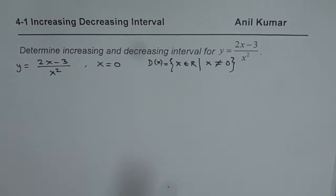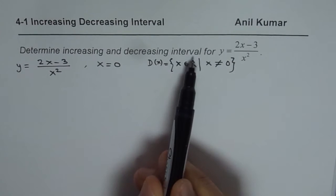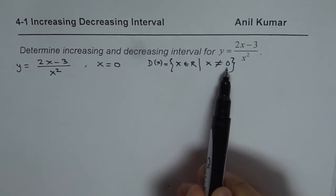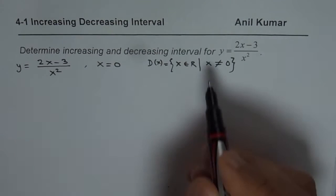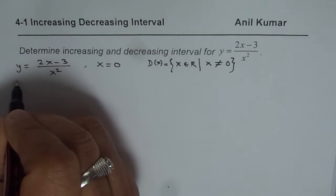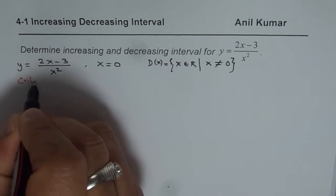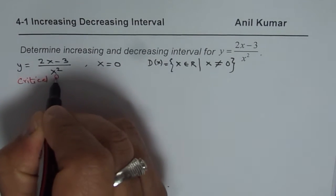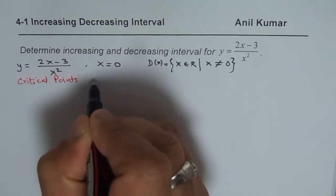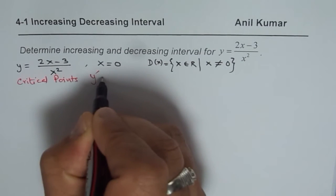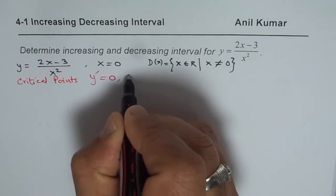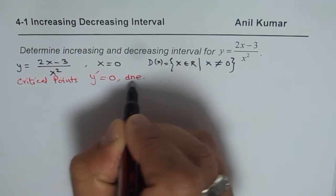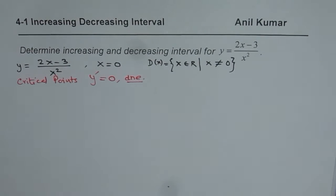When you analyze increasing and decreasing intervals, you have to consider this point of discontinuity as well. Apart from this point of discontinuity, you need to find the critical points. Critical points are points where the derivative of the function, y prime, equals 0 or does not exist.